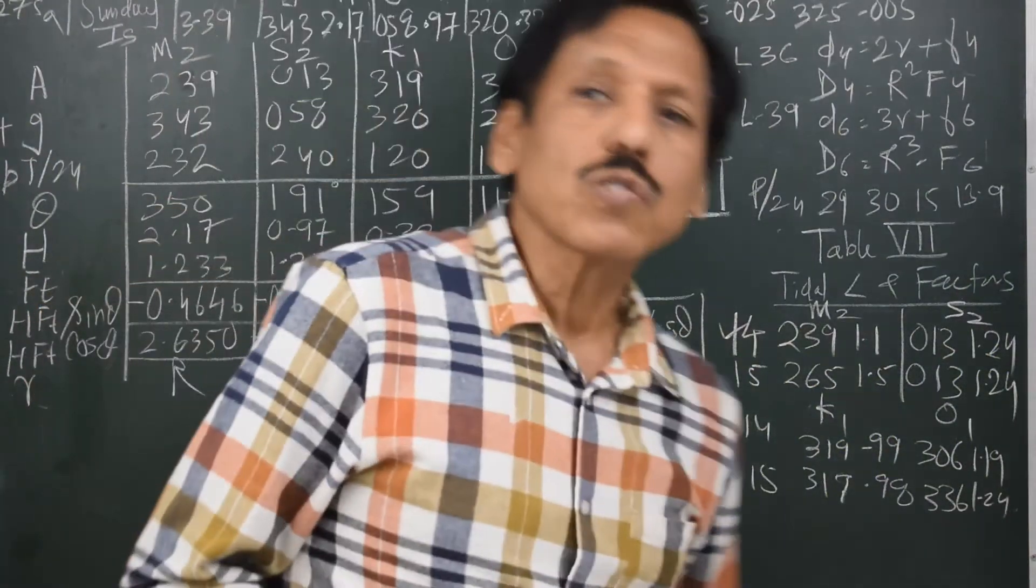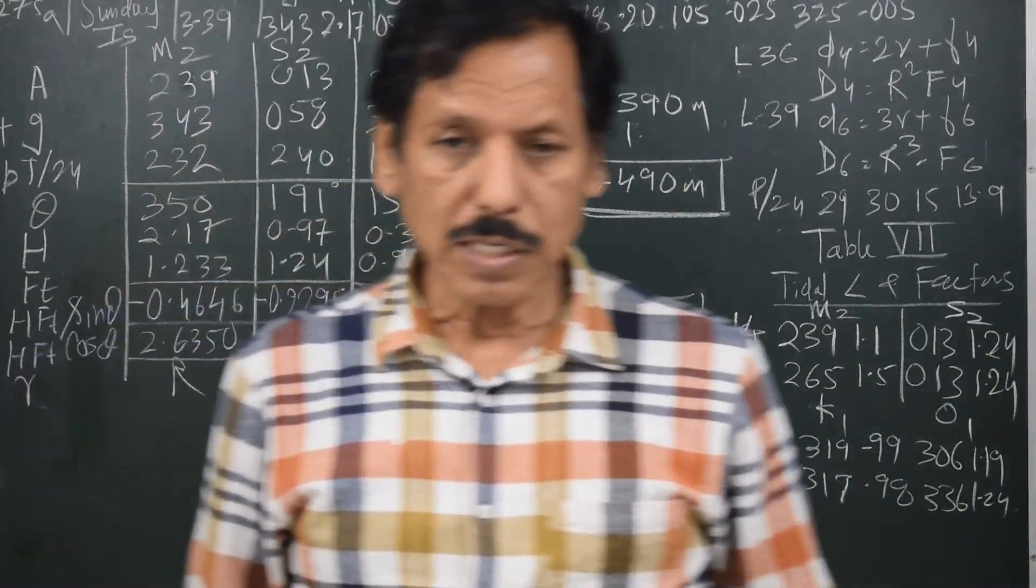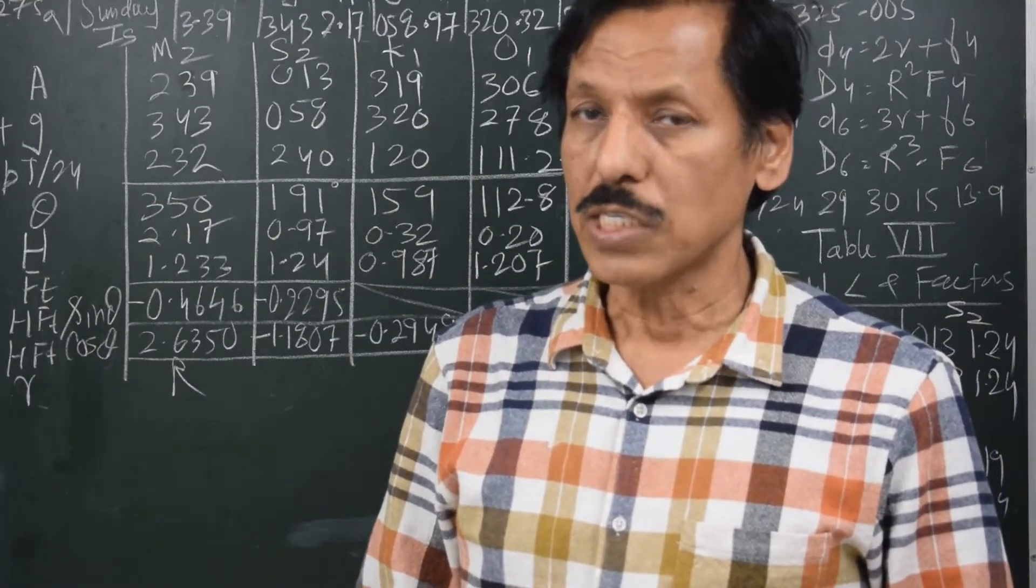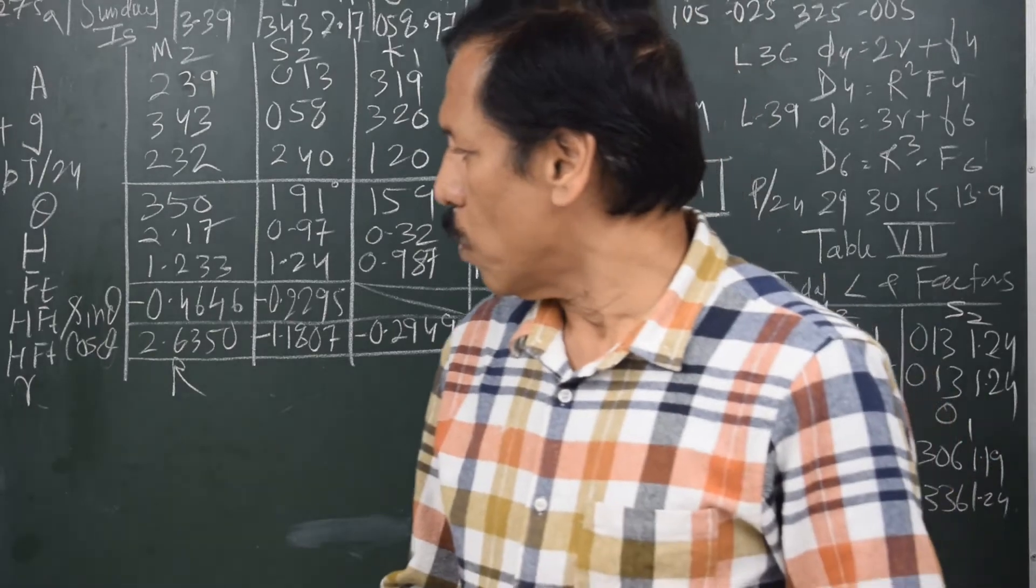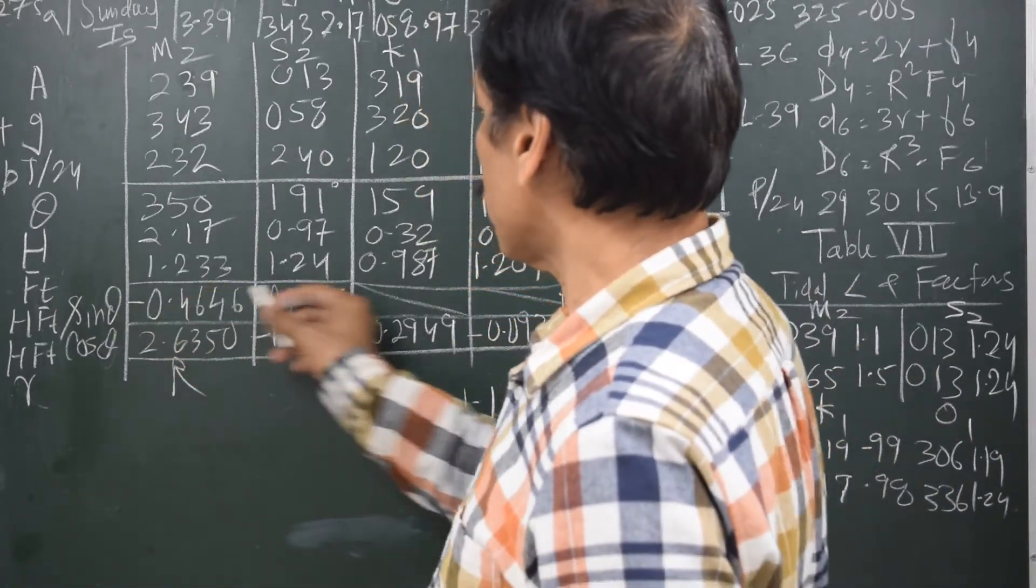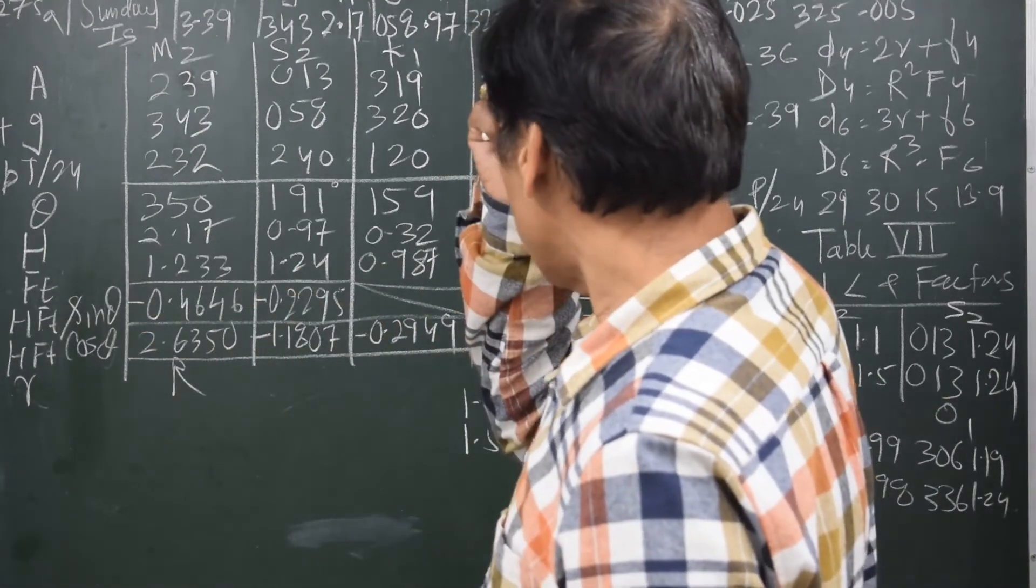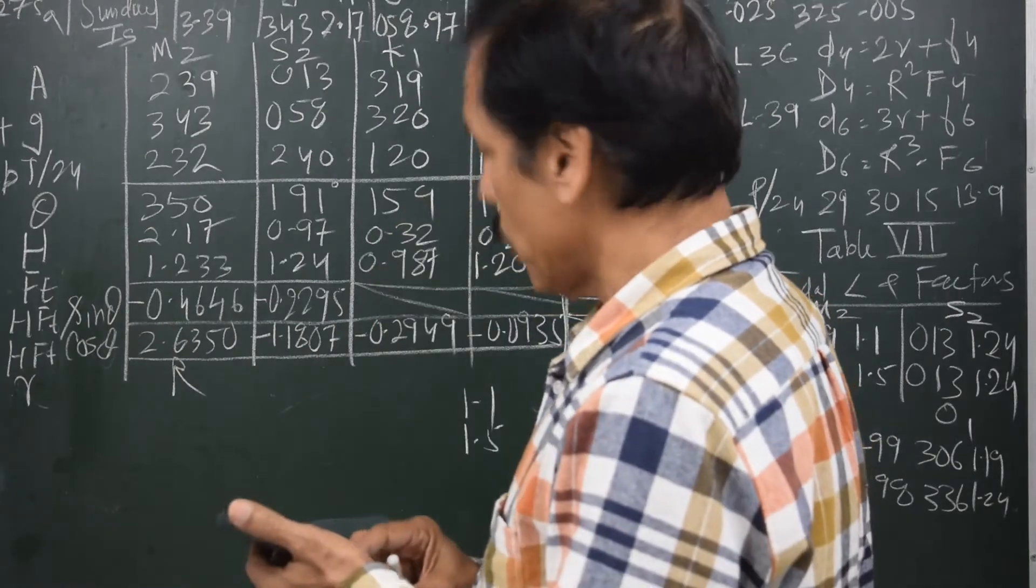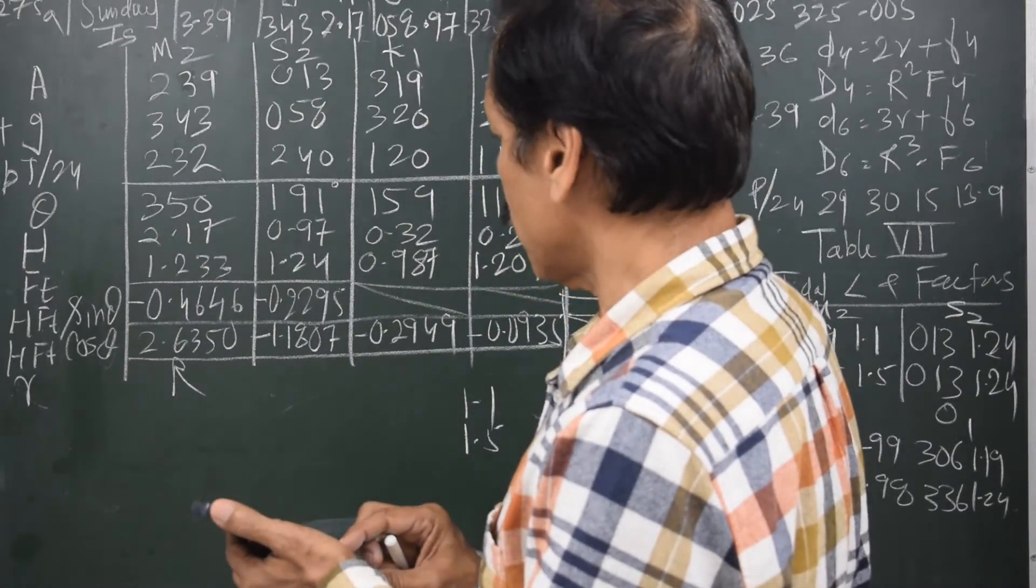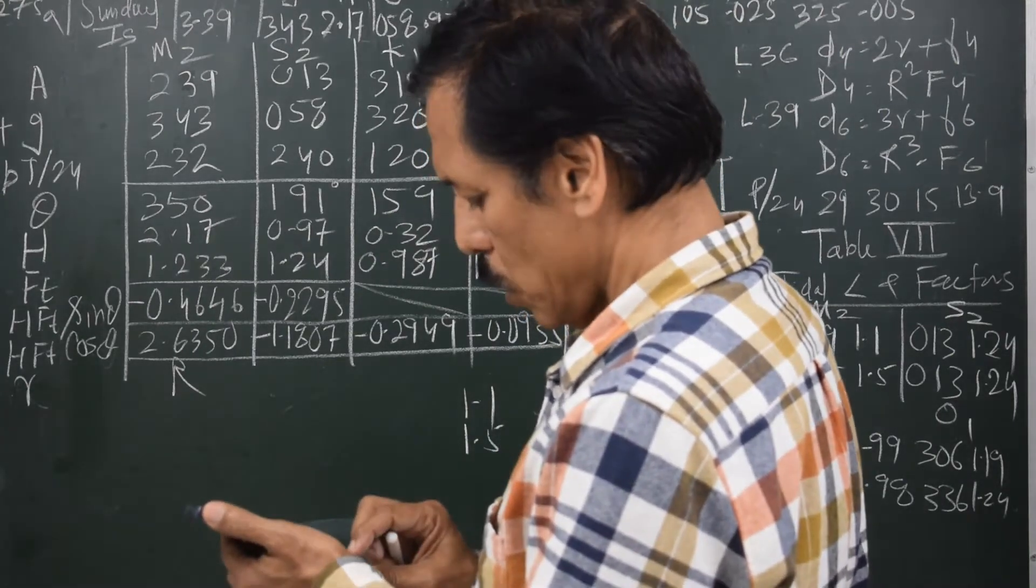Now we will proceed and do the rest of the calculations. We are planning to find out what are the quarter diagonal correction and what is the one-sixth diagonal correction. For that, let us concentrate here on the first two columns. In the first two columns, what is the sum of HFT sin theta?